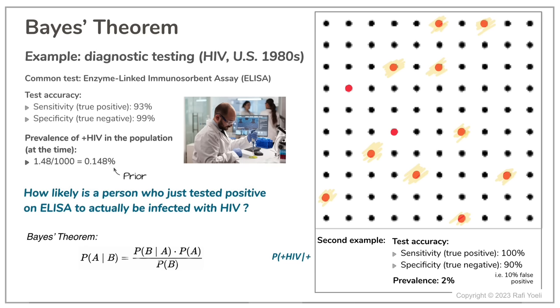If you happen to be one of these 12 positives, there's no way to tell if you are one of the two sick persons or one of the 10 healthy ones. You all came out positive. The only thing we can say is that the likelihood that you are actually sick is 2 divided by 12 which is 16.7%.